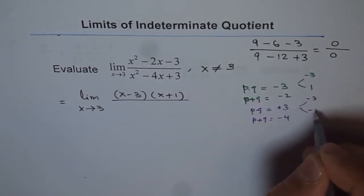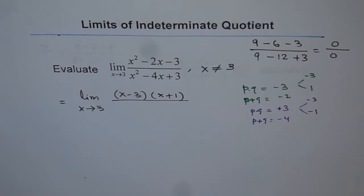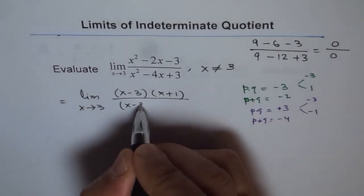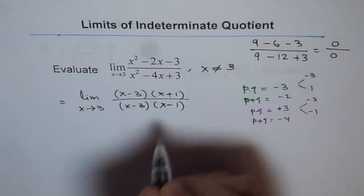So in this case, the two numbers are minus 3 and minus 1. So when you add minus 3 and minus 1, you get minus 4. So, our factors are x minus 3 times x minus 1, correct?